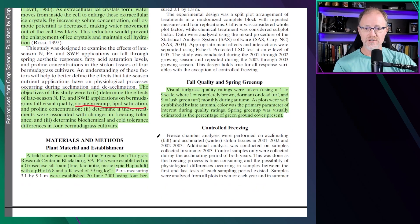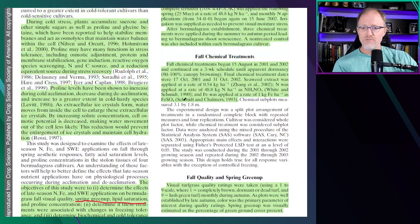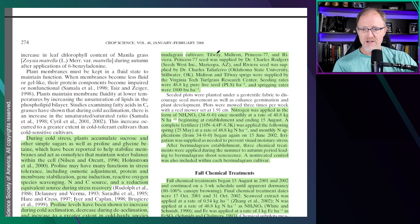It was conducted in Virginia. They used four different Bermudagrasses: Tifway, Midiron, Princess 77, and Riviera.